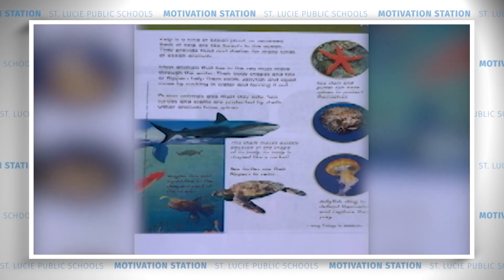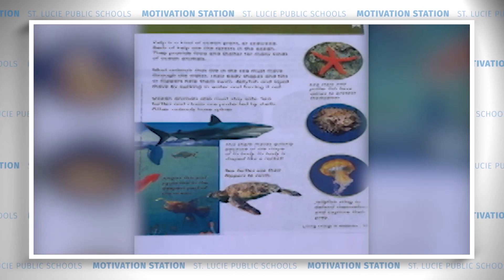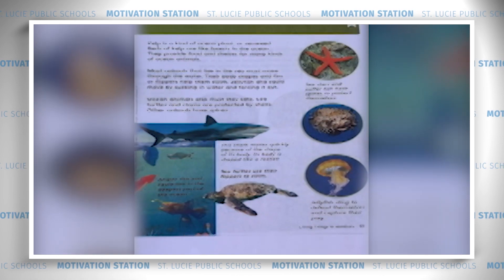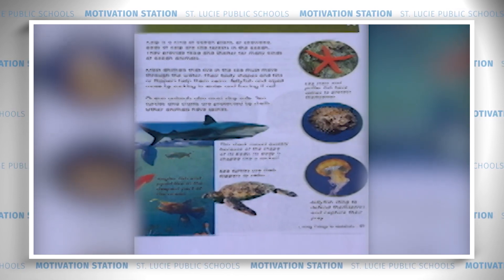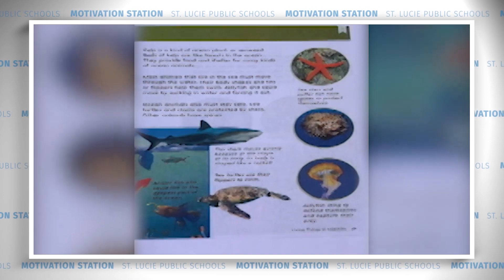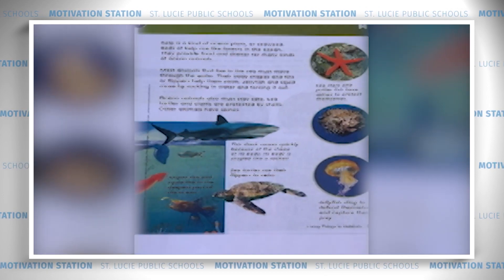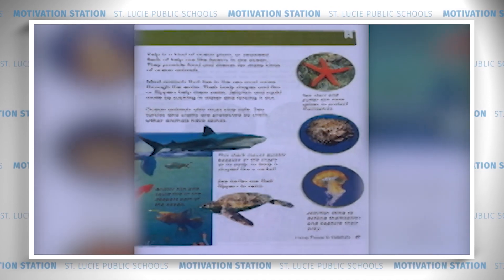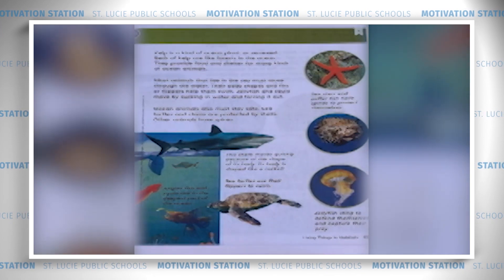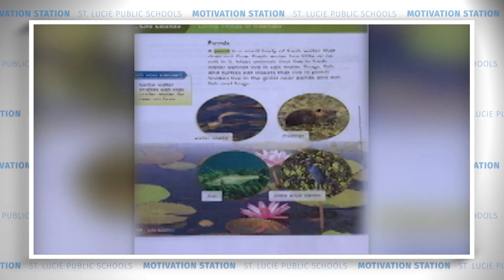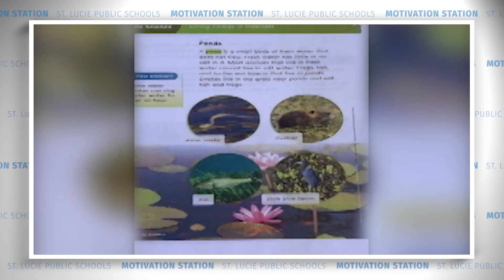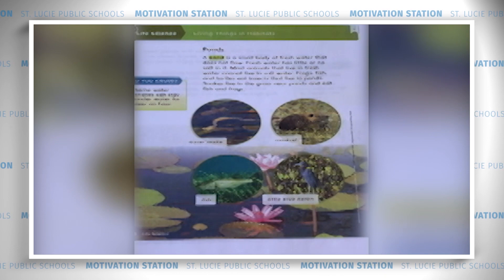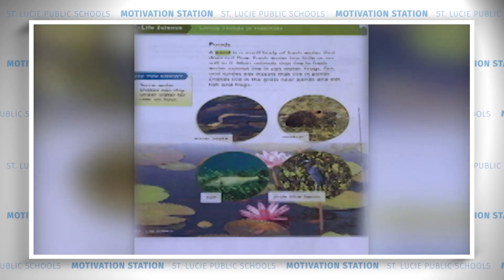Ponds! Now we're going to learn about another kind of water habitat. A pond is a small body of fresh water that does not flow. Fresh water has little or no salt in it. Most animals that live in fresh water cannot live in salt water. Frogs, fish, and turtles eat insects that live in ponds. Snakes live in the grass near ponds and eat fish and frogs. I'm going to challenge you to read this last page by yourself. Read now.